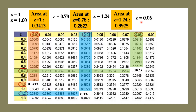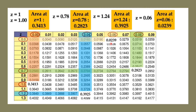How about z equals 0.06? The first two digits are 0.0, located here. The last digit is 6, located here. Their intersection is at 0.0239. That is the process for determining the area given a z-value or z-score.